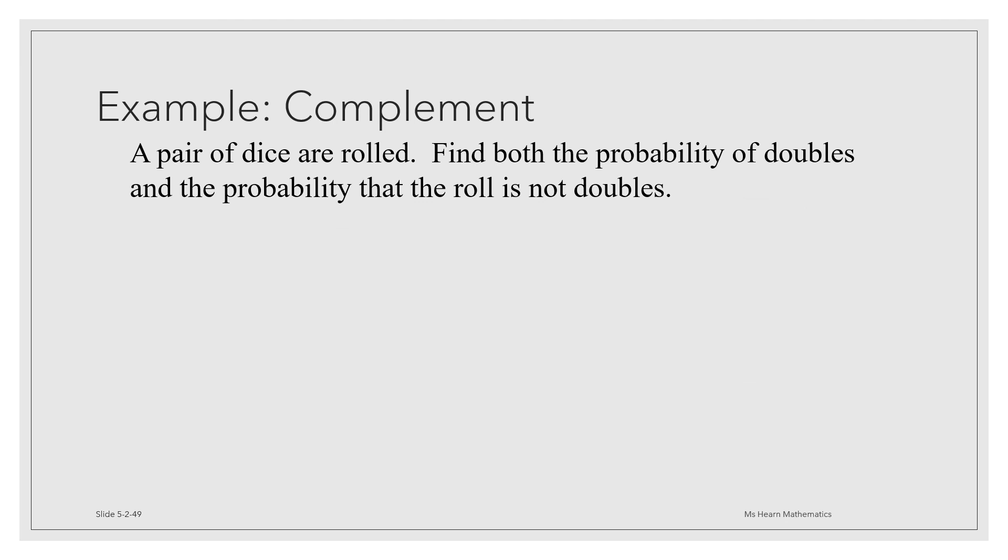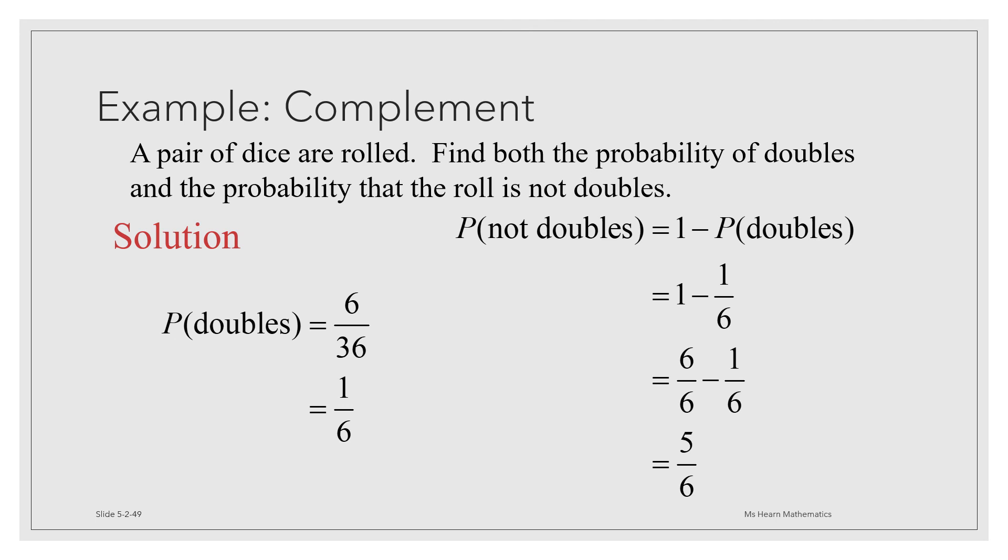There are 6 ways that you can get doubles out of 36 possible rolls of the two dice. To find the probability of doubles, we're going to take the number of favorable outcomes, 6, and divide it by the total number of outcomes, which is 36. Reducing to lowest terms, we get 1/6. To get the probability that we are not going to get doubles, we can use the complements principle. Probability that we don't get doubles is 1 minus the probability of doubles, or 1 minus 1/6. After you get a common denominator and subtract, that's going to leave us with 5/6.